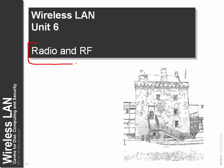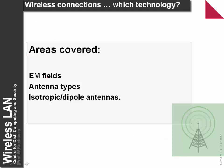In this lecture, we'll look at one of the key areas of wireless, which is radio waves, or RF. The areas we'll cover are electromagnetic fields, antenna types, and the differentiation between isotropic and dipole antennas.